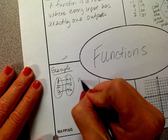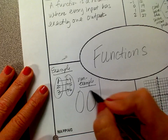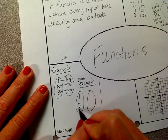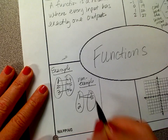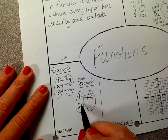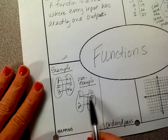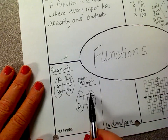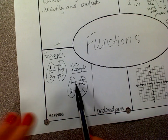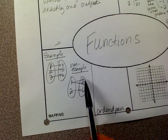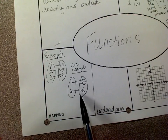Here's a non-example for mapping. If 1 goes to both 4 and 5, and 2 goes to 6 — right here, this is saying that 1 is going to 4 and 5. That's not possible for a function. You can't put in 1, do something to it, and get a 4, then do it again and get a 5. So that's an example of not a function.